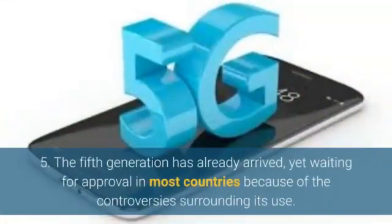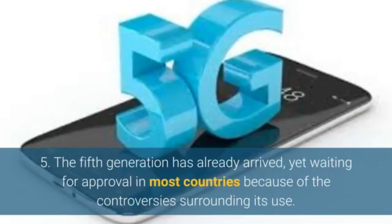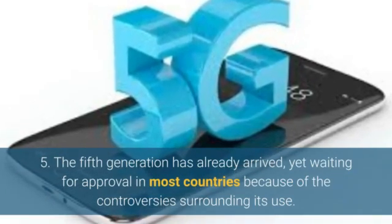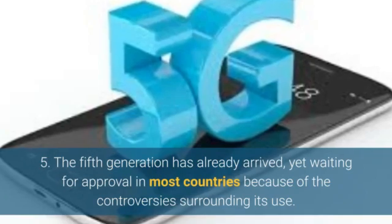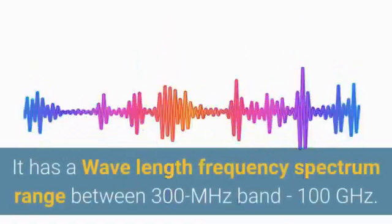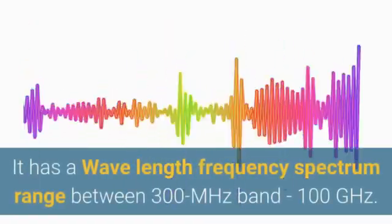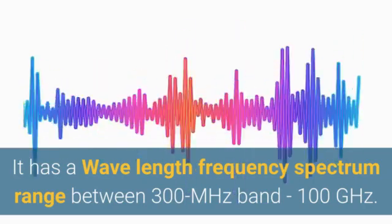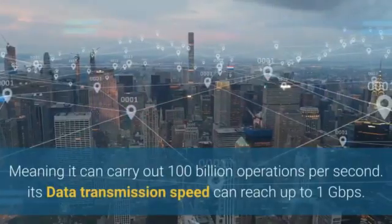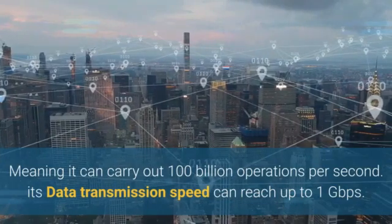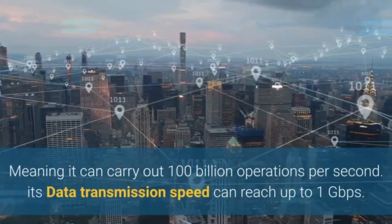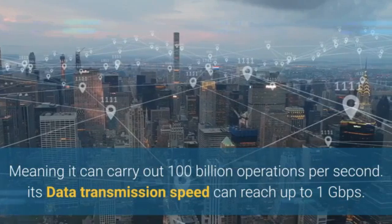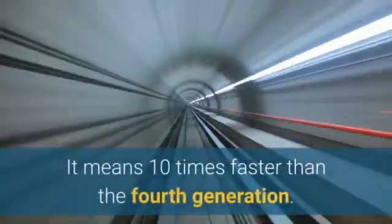The fifth generation has already arrived, yet waiting for approval in most countries because of the controversies surrounding its use. It has a wavelength frequency spectrum range between 300 MHz and 100 gigahertz, meaning it can carry out 100 billion operations per second. Its data transmission speed can reach up to 1 gigabit per second — 10 times faster than the fourth generation.